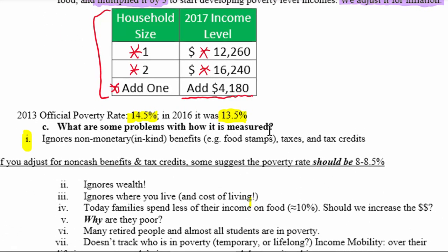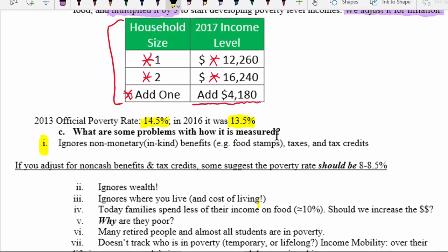Number one, the way we measure poverty is based on cash income, and this ignores a lot of non-monetary, sometimes called in-kind benefits that people receive. For example, a common non-cash benefit in the United States is food stamps — you get a card to take to the grocery store to buy food. Since it's not cash, it's not counted as part of the income figures.